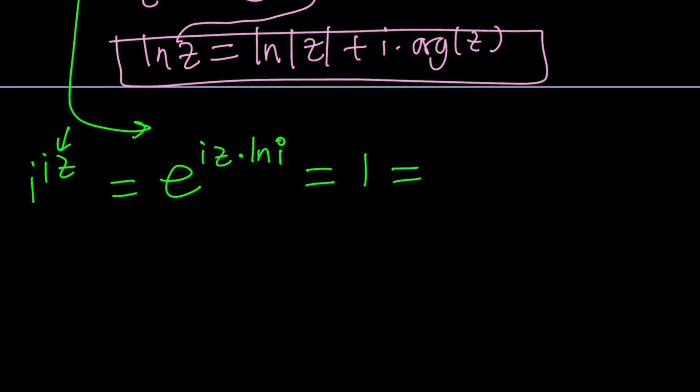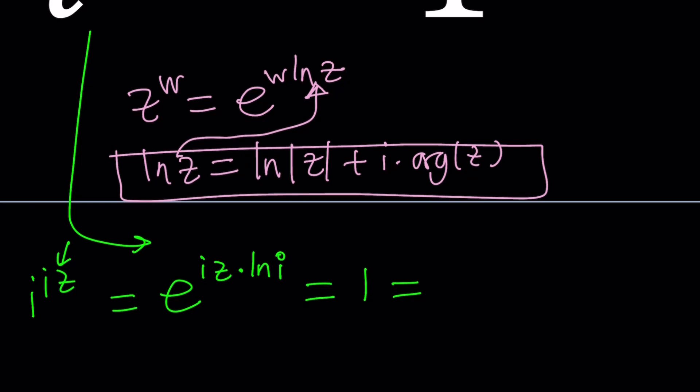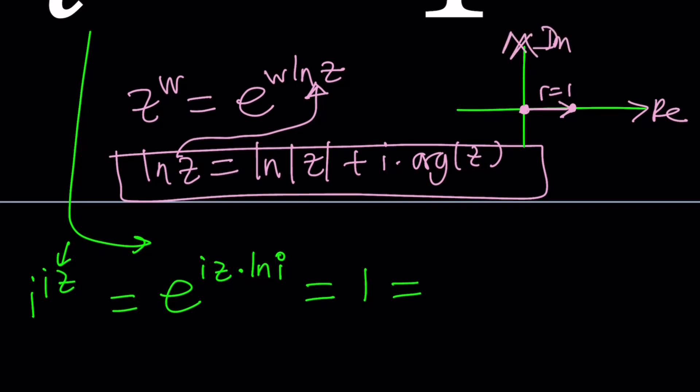We can do something for 1 using the Argand plane A-R-G-A-N-D. Don't forget the D at the end. We can go ahead and plot 1. It's basically 1 unit away from 0 right here. The modulus is 1 and the argument is the angle it makes, which is 0 radians or 2 pi radians or any multiple of 2 pi. In other words we can write 1 as e to the power i times 2 pi n. Some people also write it as e to the power 2 pi n i. But I wanted to use this notation because it's more appropriate to write things in e to the power i theta form.